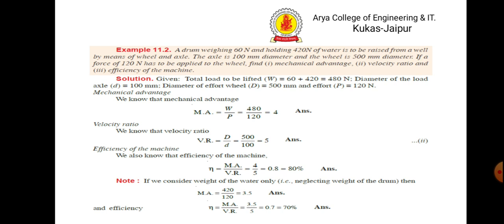Suppose in the problem it is given that we neglect the weight of the drum — that is, we find efficiency for water only. Then we consider the weight of water only, neglecting the drum weight. Mechanical advantage = 420/120 = 3.5. Efficiency = mechanical advantage / velocity ratio = 70%.